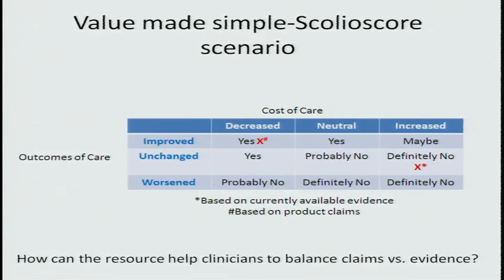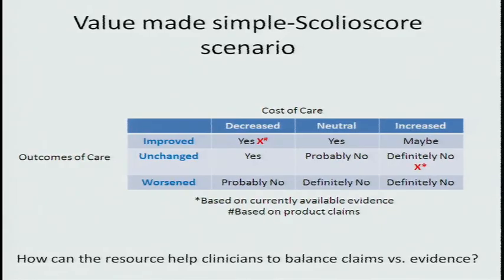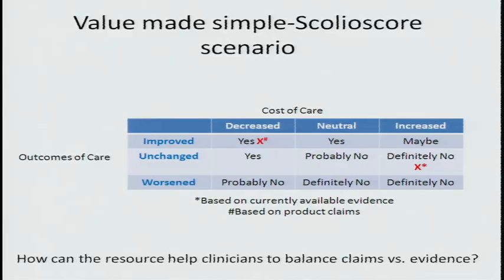Based on currently available evidence, I would put the scoliosis score in the definitely-no category: outcomes are essentially unchanged and cost of care is increased because we're doing an additional test. However, the claims indicate this will improve care because, much like the Oncotype test, what this test is designed to do is identify the 95% of 12-year-old girls with idiopathic scoliosis who will not progress to malignant curve progression, thereby avoiding X-ray monitoring and the harms associated with it. So the question is: how can the proposed resource help clinicians balance claims from a company against evidence?